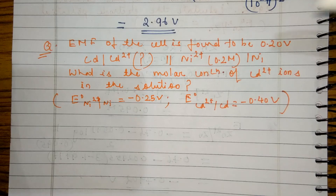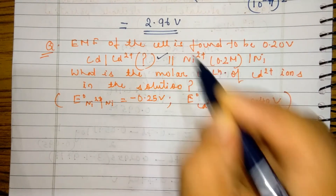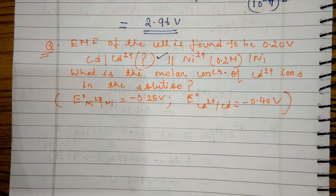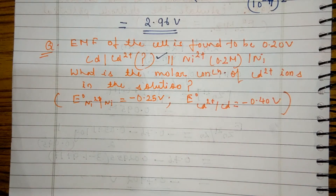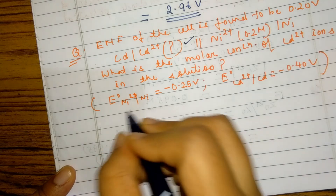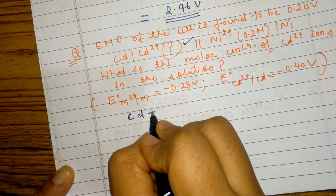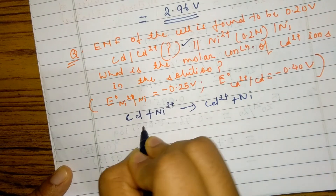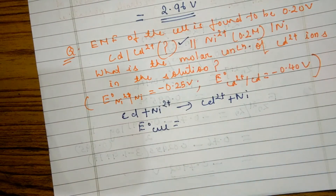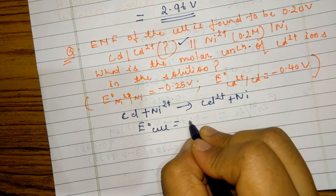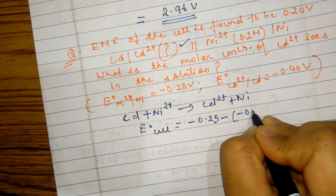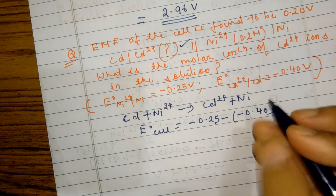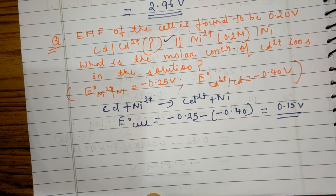The next question is slightly different. The EMF of the cell is already given as 0.20 V, and the cell representation is provided. We are asked to find the molar concentration of cadmium ions. The cell reaction is: Cd + Ni²⁺ → Cd²⁺ + Ni. E⁰cell = E⁰cathode − E⁰anode = −0.25 − (−0.40) = 0.15 V.